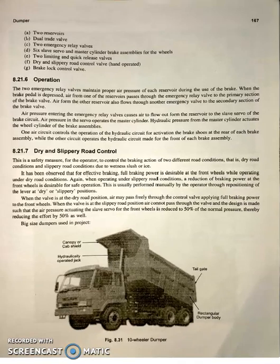The operation is as follows: the two emergency relay valves maintain the proper air pressure of each reservoir. During use of the brake, when the brake pedal is depressed, air from one of the reservoirs passes through the emergency relay valve to the primary section of the brake valve. Air from the other reservoir also flows through the other emergency valve to the secondary section of the brake valve.